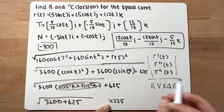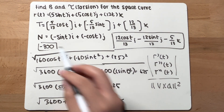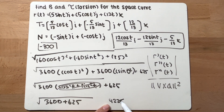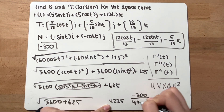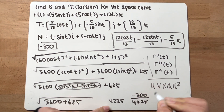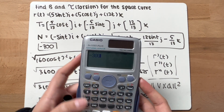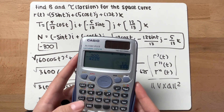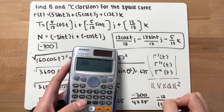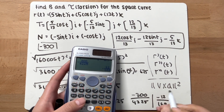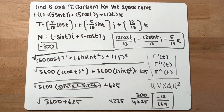We have the numerator negative 300 and the denominator 4,225. Plugging into a calculator, negative 300 over 4,225 gives negative 12 over 169. So this is the torsion for the space curve.